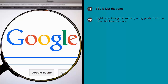Right now, Google is making a big push toward a more AI-driven service. It wants the user to speak to Google using natural language and to receive carefully curated responses drawn from the web. That is far more complex than simply looking for exact keyword matches, and it makes our job as SEOs that much harder. That's why using A/B tests to identify precisely what works and what doesn't is such an important move.